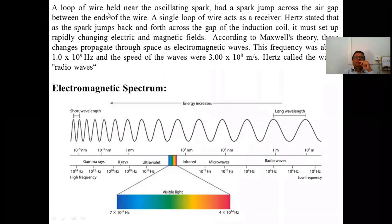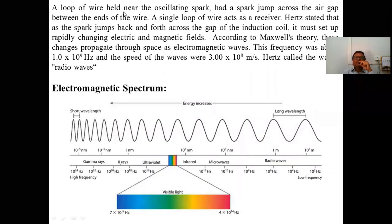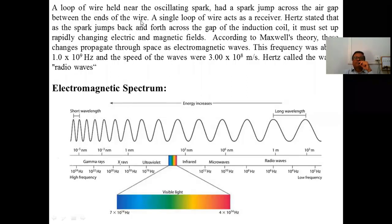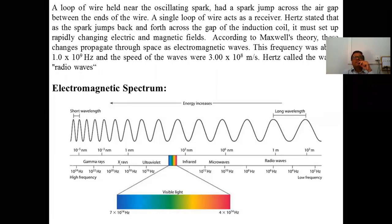A loop of wire held near the oscillating spark had a spark jump across the air gap between the ends of the wire. The entire wire and its ends showed a spark, confirming reception of the electromagnetic wave. This loop of wire is called the receiver.